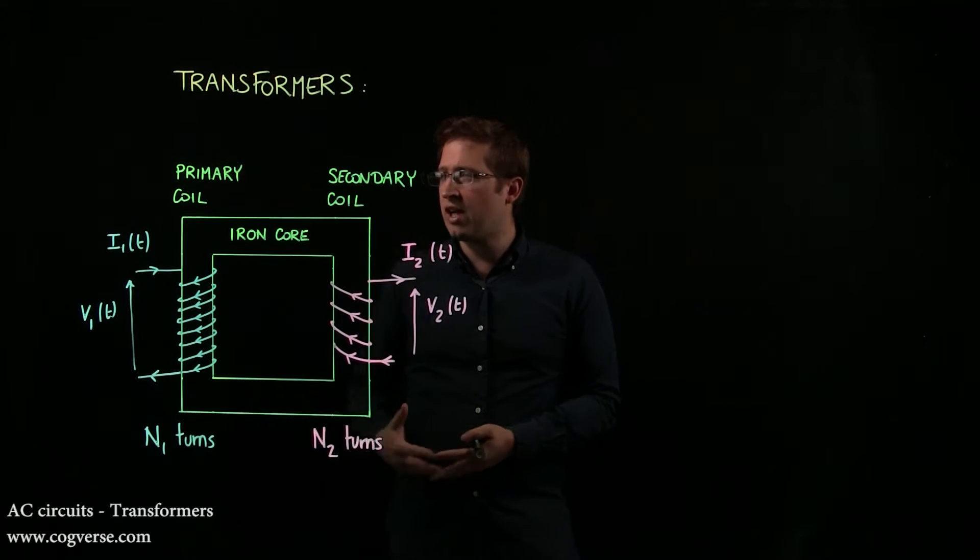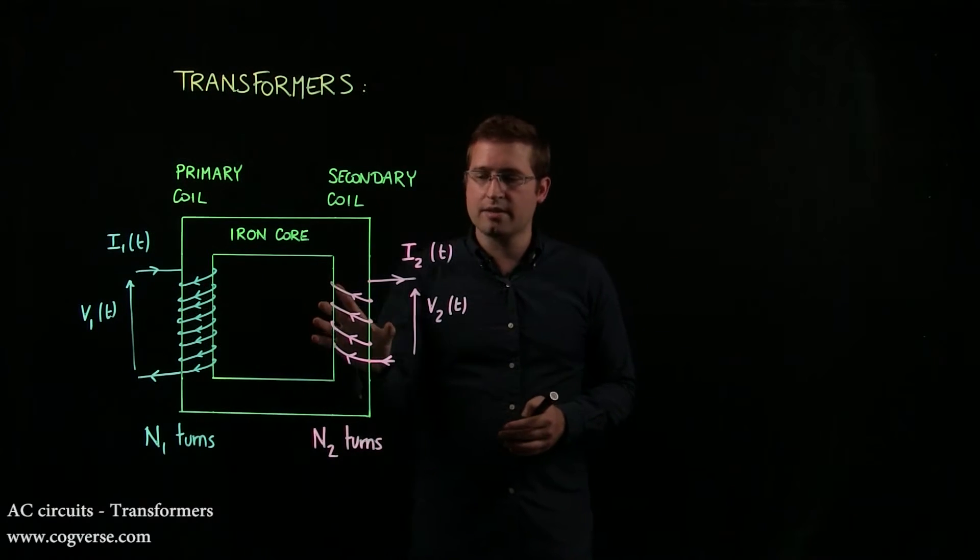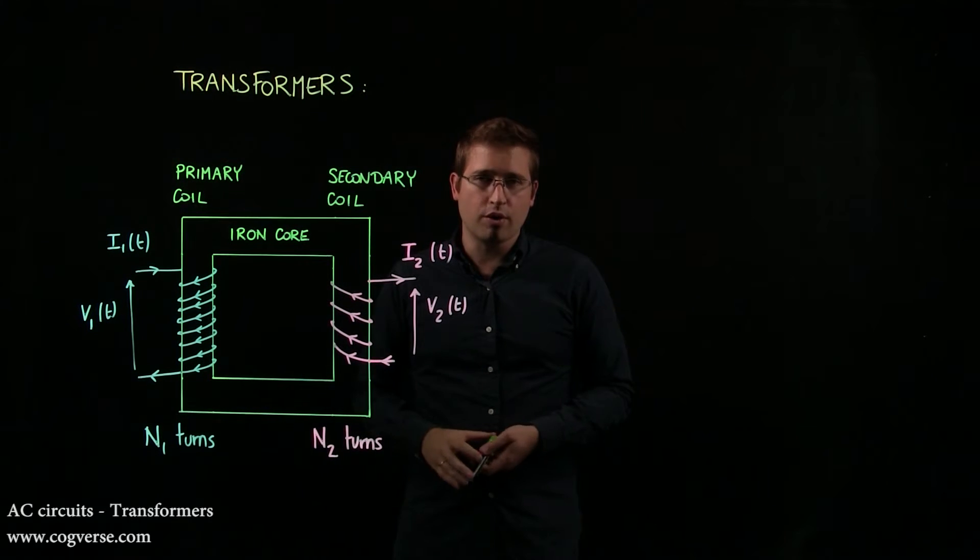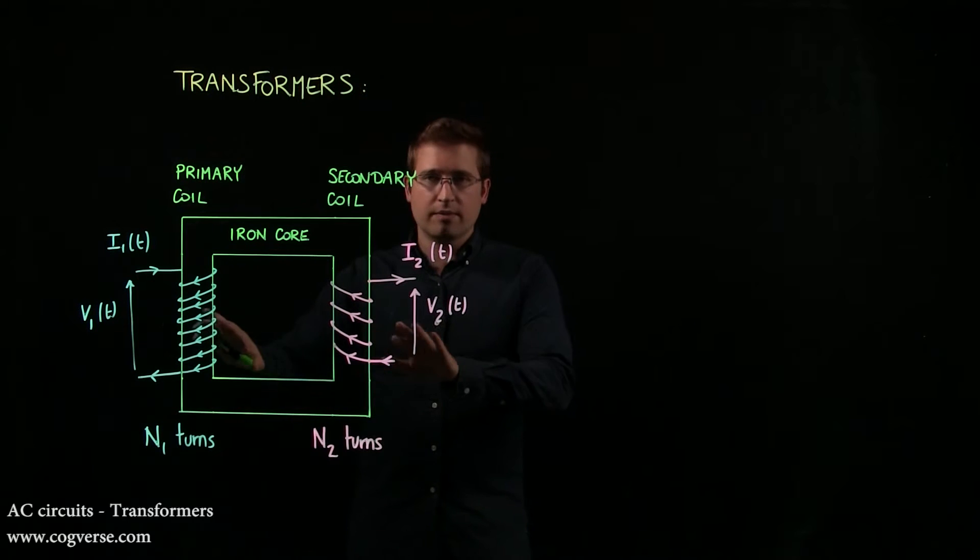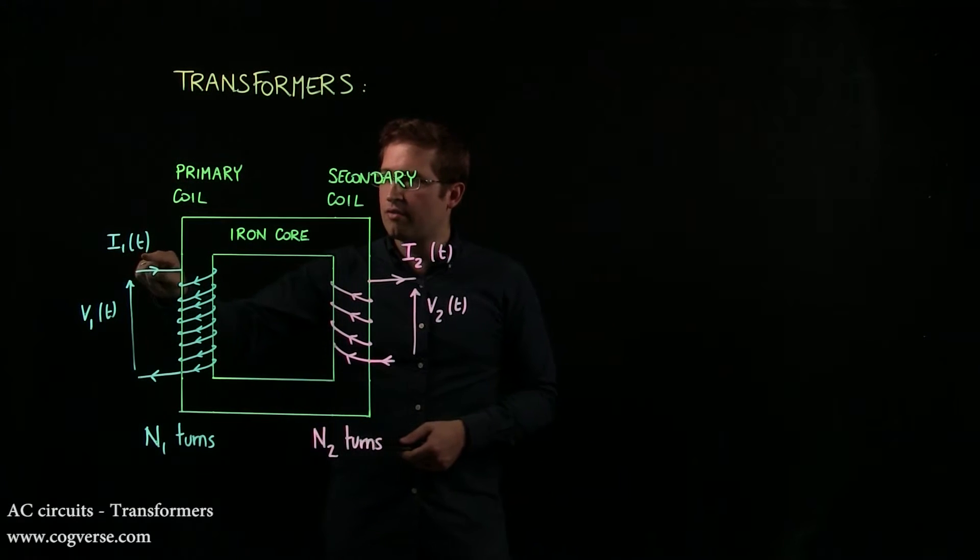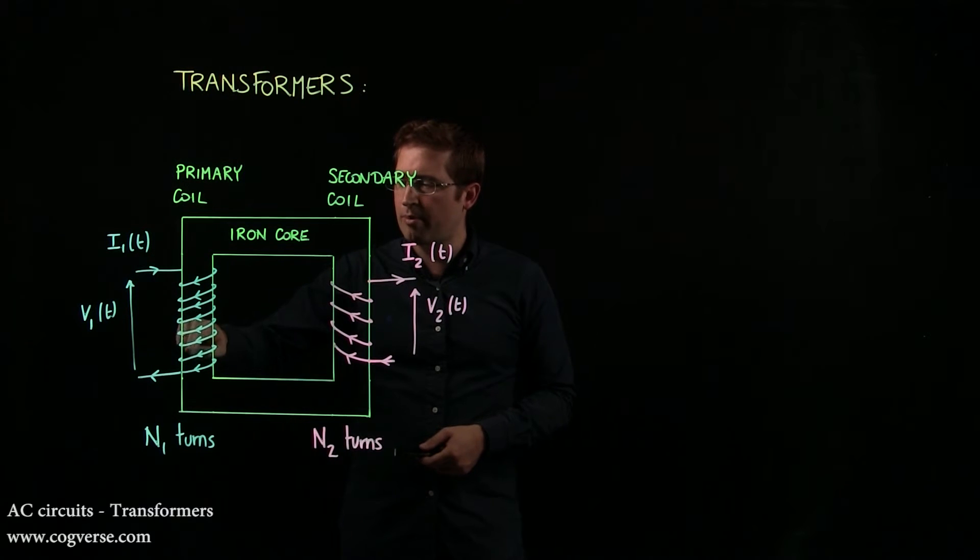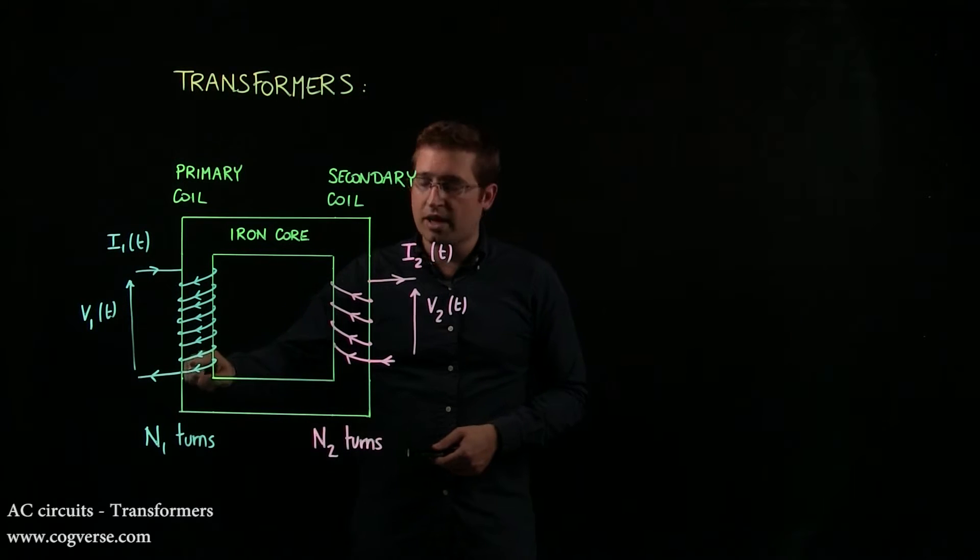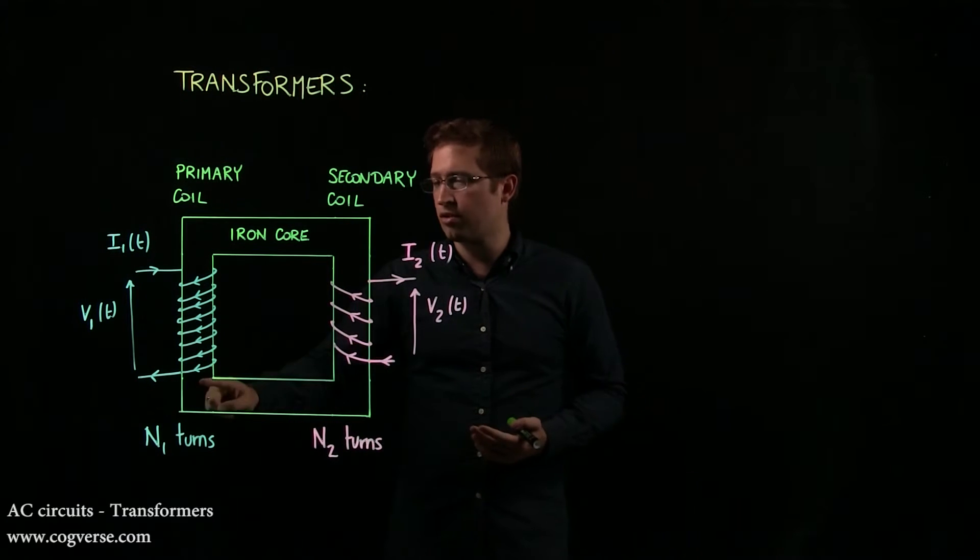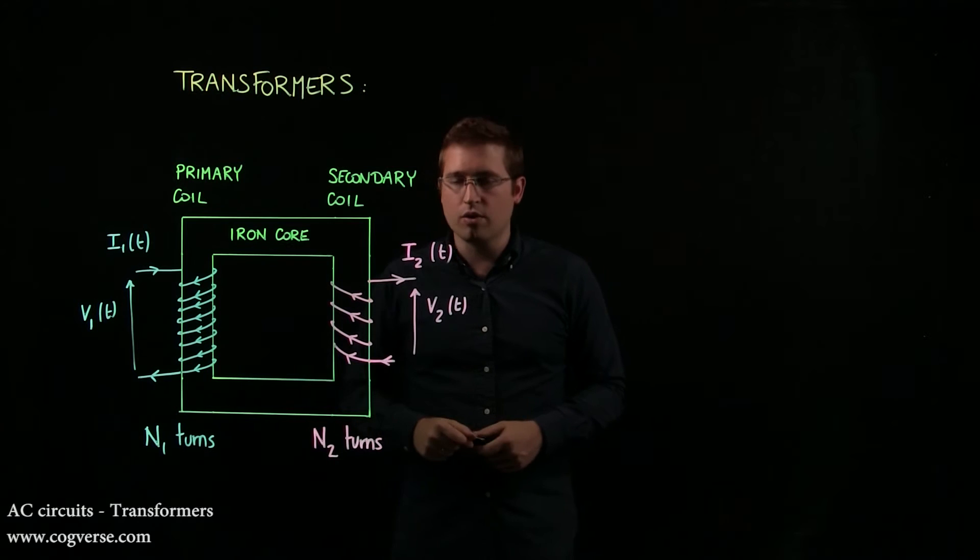However, any transformer will have a primary coil and a secondary coil that are connected with an iron core, but electrically insulated. As the current varies through the primary coil, the changing magnetic flux is felt by the secondary coil because the magnetic field lines are trapped in the iron core.